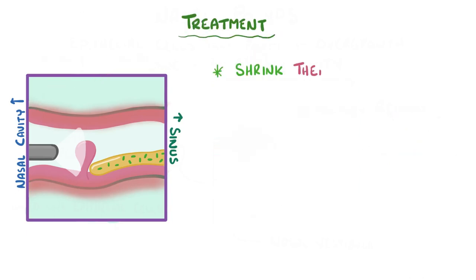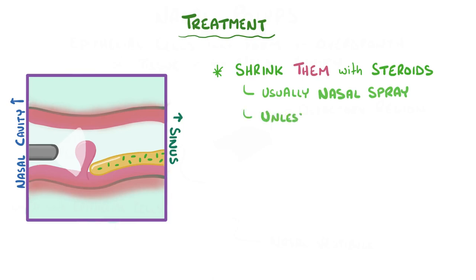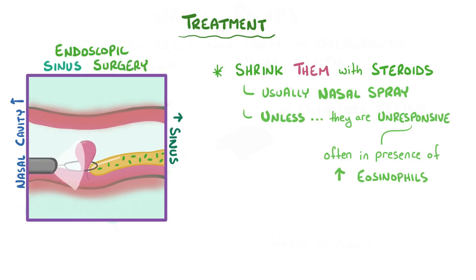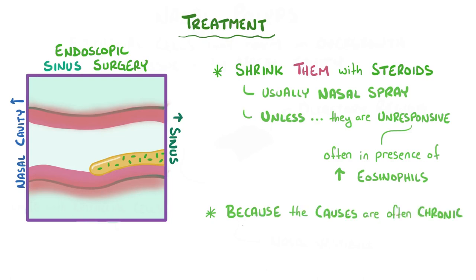The treatment for polyps is to shrink them using steroids, usually in the form of a nasal spray. The steroids act to decrease the inflammation and swelling from the polyp. But some polyps are unresponsive to steroids — this tends to happen when there are high levels of eosinophils, a specialized type of immune cell. In these cases, endoscopic sinus surgery might be needed to cut them out. Unfortunately, because the underlying causes for polyps are often chronic conditions like allergies and asthma, polyps often return, so repeat treatments are typically needed.